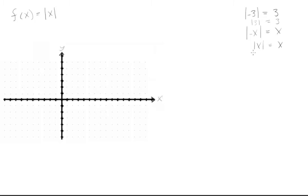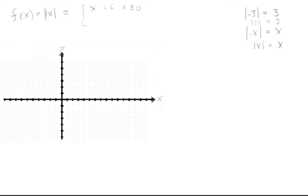Now let's look at these x values. If we want to graph the absolute value of x, if x is positive, the absolute value of x will just be x. So we can say that |x| = x if x is greater than or equal to 0. And the absolute value of x is actually going to equal -x if x is less than 0.